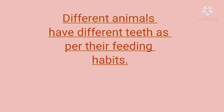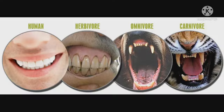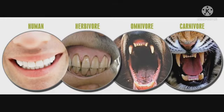Different animals also have different teeth as per their feeding habits. Herbivores have sharp teeth known as incisors in the front to cut grass and leaves. Carnivores have strong grinding teeth to chew the flesh and bones of the animals they eat. Omnivores have teeth for cutting — known as incisors — tearing flesh, known as canines, and chewing or grinding food, known as molars and premolars.